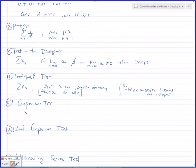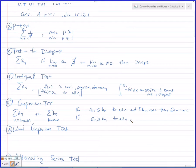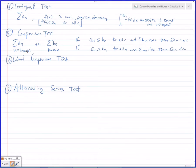Comparison test. You have the unknown A sub N versus the known B sub N. If A sub N is less than or equal to B sub N for all N and B sub N converges, then A sub N converges. If A sub N is bigger than or equal to B sub N for all N and B sub N diverges, then A sub N diverges. The hard part is finding the actual B sub N to bound above or below.